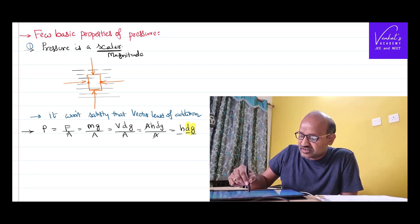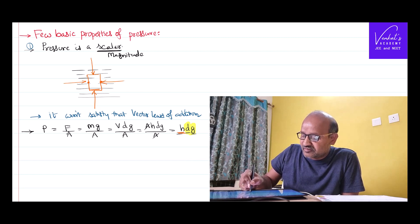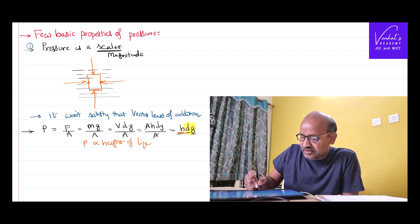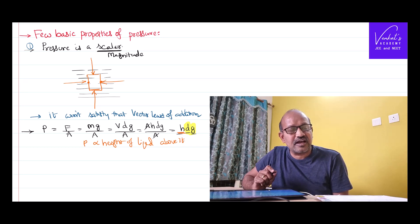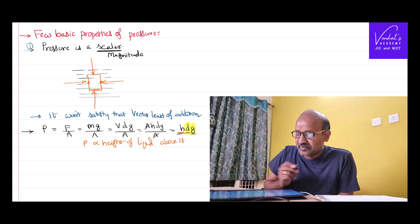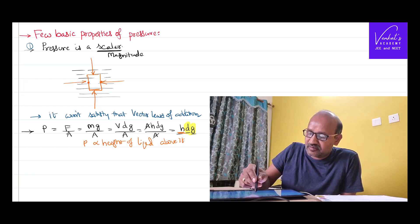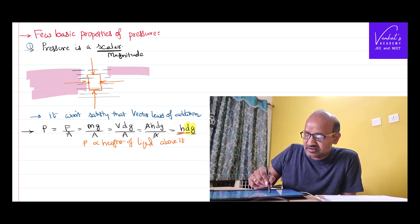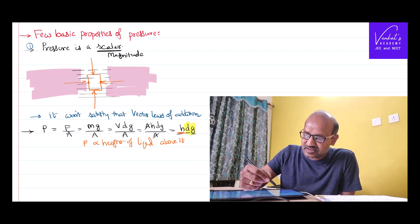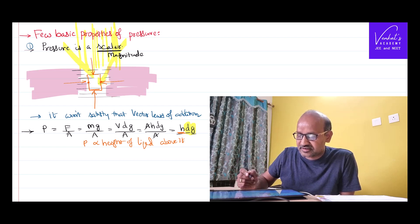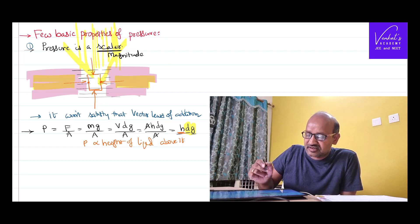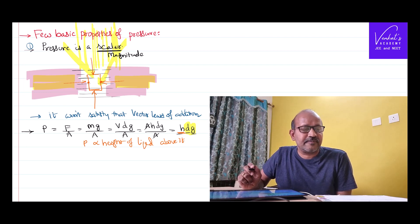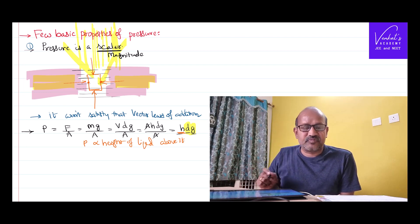Acceleration due to gravity is constant, and density of the fluid is also constant, so pressure varies directly proportional to the height of the fluid above it. Be careful — it's about the height of the fluid above the point, not the height in the horizontal direction. So how much pressure acts in the horizontal direction doesn't make a difference. Only the vertical height matters. Therefore, pressure is independent of horizontal directions.